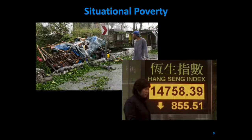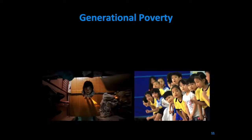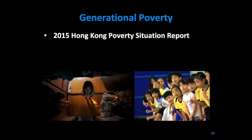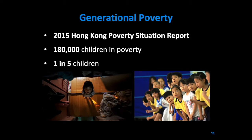The fourth type of poverty is generational poverty. Generational poverty occurs when at least two generations of a family have been born into poverty. For example, the 2015 Hong Kong poverty situation report estimated there are about 180,000 children who live in poverty — that's about one in five children who are under the poverty line and who often have less opportunities for growth and development. Working poor families and single-parent families are more vulnerable to poverty, so their children are often left in a state of poverty too.